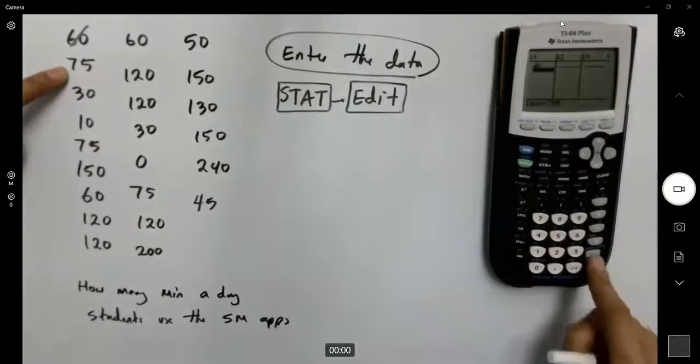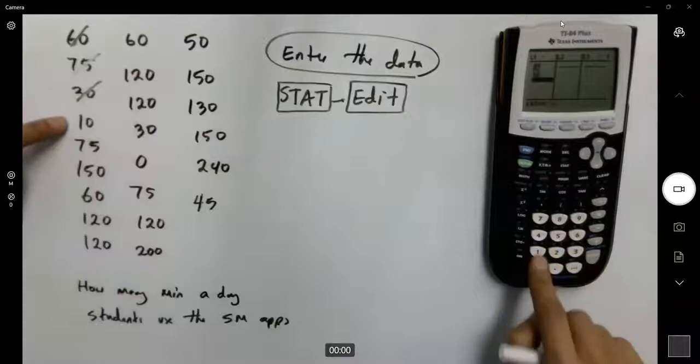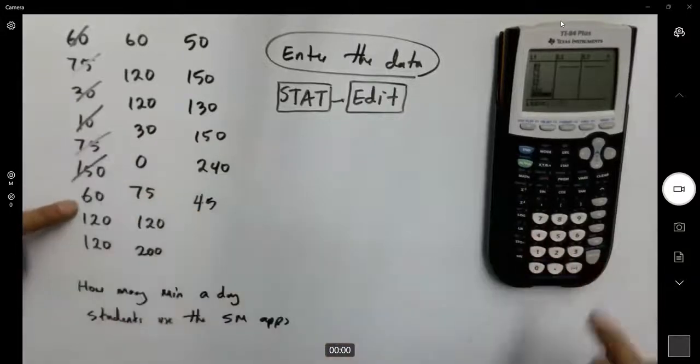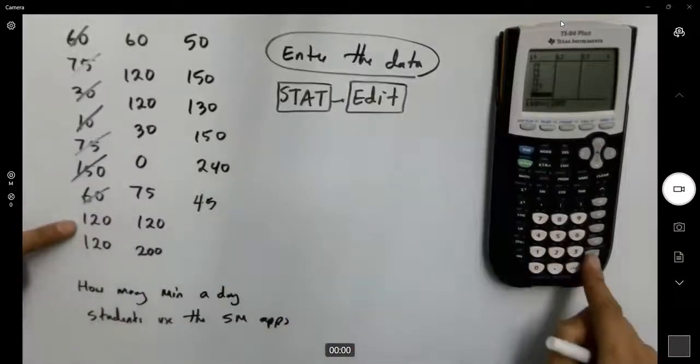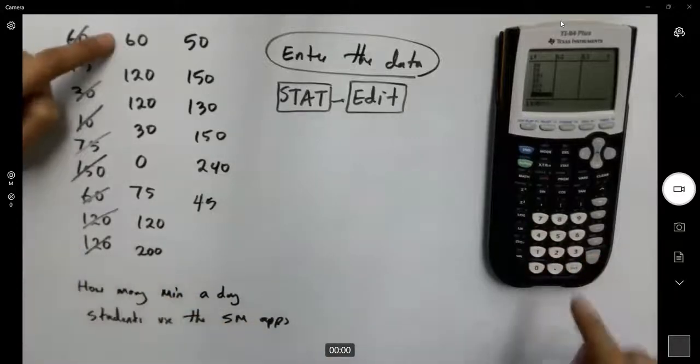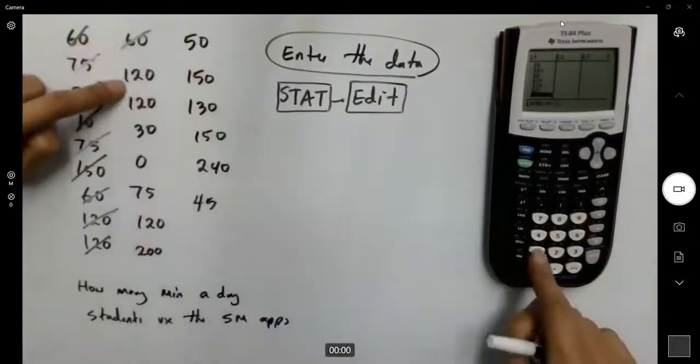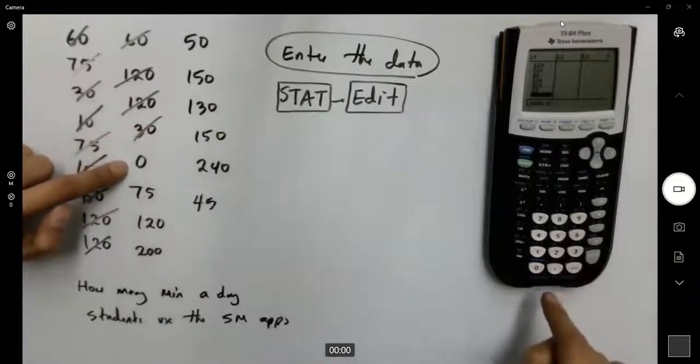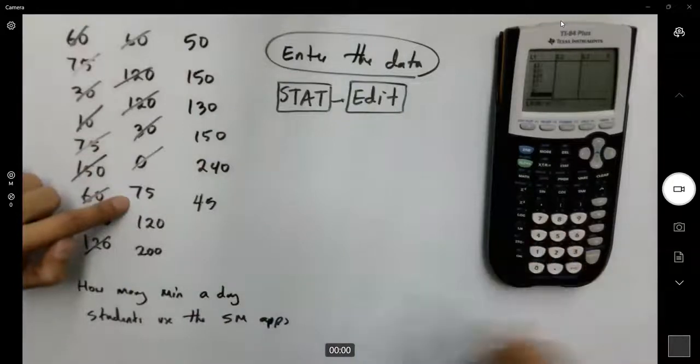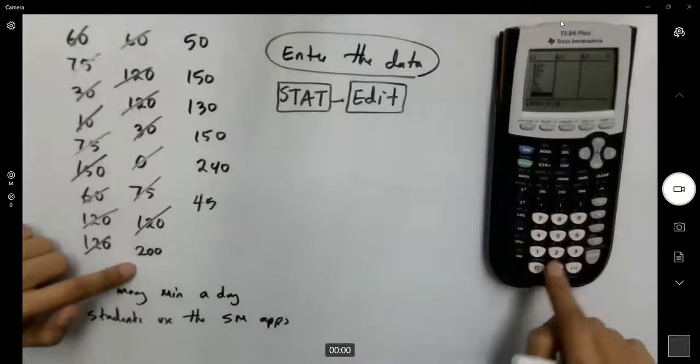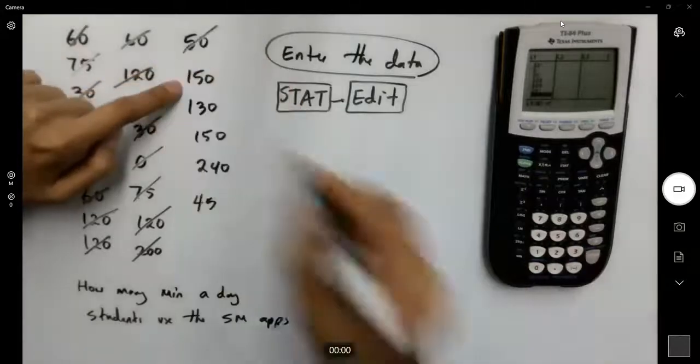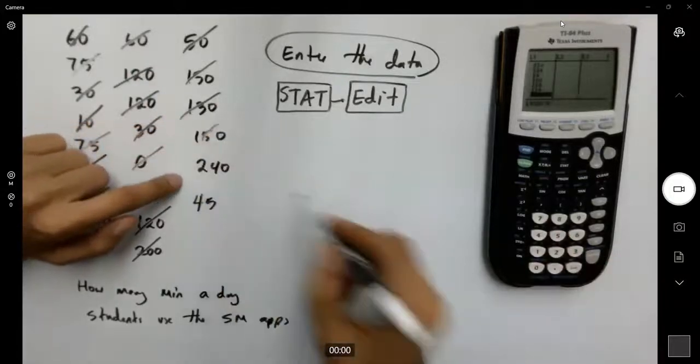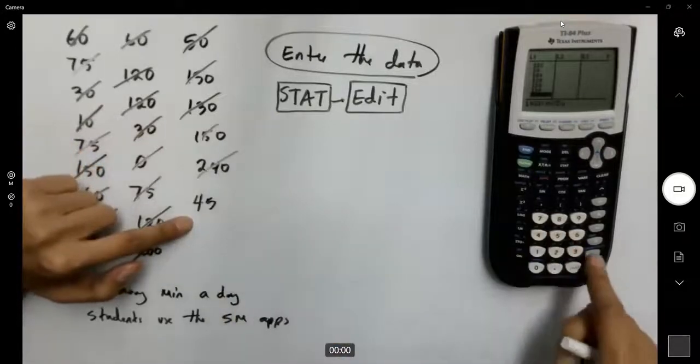Then 60, 75, 30, 10, 75, 150, 60, 120, another 120, 60, 120, another 120, 30, 0, 75, 120, 200, 50, 150, 130, 150, 240, and 45.